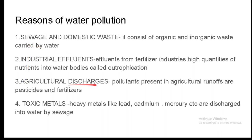Let us discuss water pollution by agricultural discharge. Water leaving from fields as a result of irrigation activities, rain, melted snow, etc. is referred to as agricultural runoff. In agricultural runoff, two extremely harmful kinds of pollutants are pesticides and fertilizers.